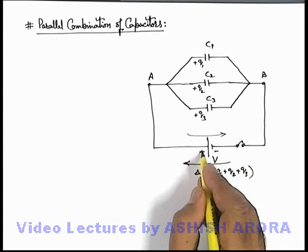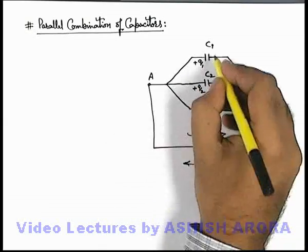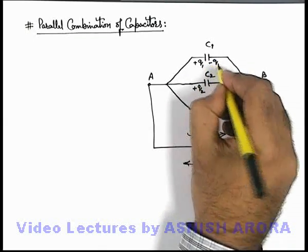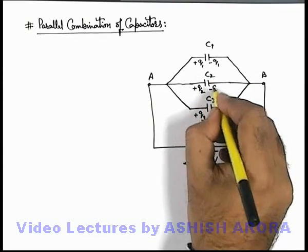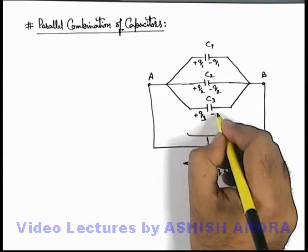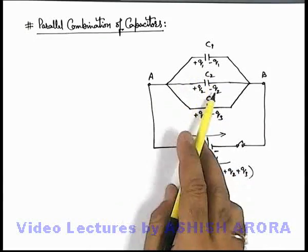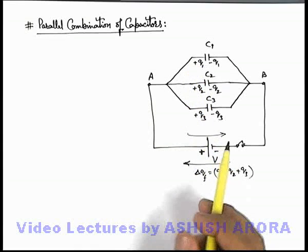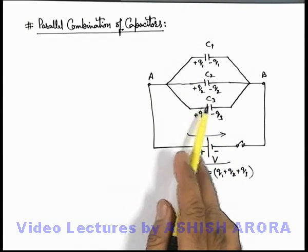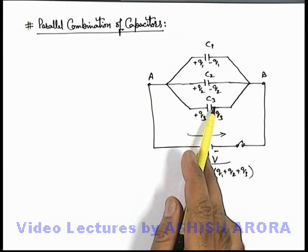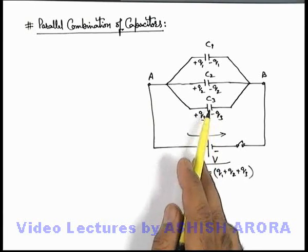This is because this positive terminal of battery will pull free electrons of the plates and supply to the other side. So as we know, the charges on the inner surfaces of the plates of capacitor are always equal and opposite. So charges on the capacitors will be plus minus, plus minus, plus minus q1, q2, q3. And as we already discussed, in case of a capacitor there won't be any charge on the outer surface of the plates of capacitor. Whatever charge we discuss will only be residing on inner surfaces.